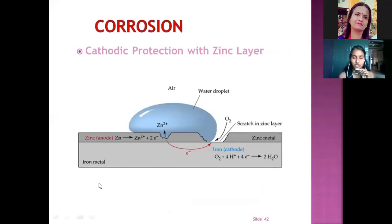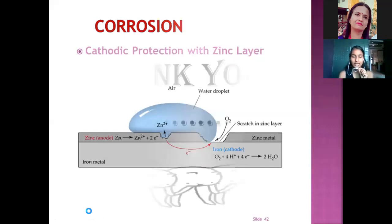How the cathodic protection occurs. Iron metal is coated with the zinc and when moisture is exposed to the metal, the zinc will oxidize and form Zn 2 plus plus 2 electrons, whereas the iron cathode forms just O2 plus 4H plus ions plus 4 electrons and it just forms water. No oxidation of iron occurs here. Thank you all!